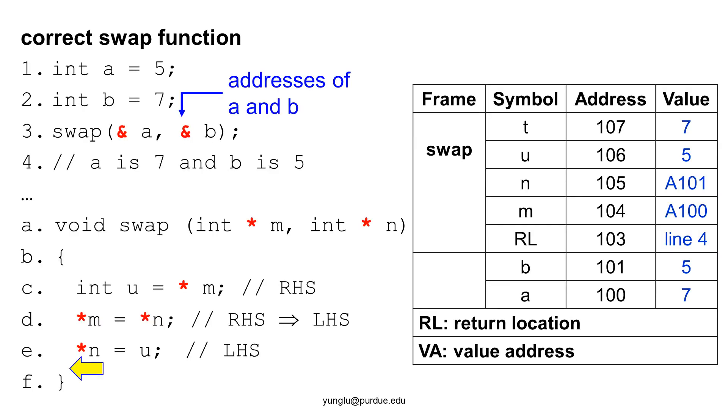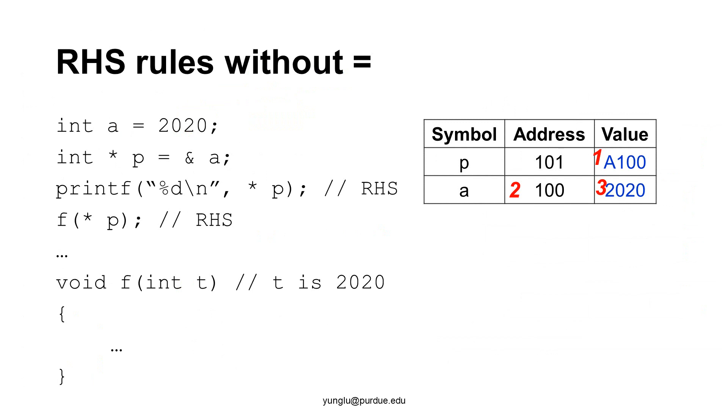This is a review of the previous lecture. We need to use pointers for writing the swap function. This slide shows the stack memory when the swap function has finished all statements and the top frame is about to pop. By using the addresses of a and b, the arguments m and n can modify the values of a and b even though a and b are not in the frame of the swap function. Please remember the rules for asterisk based on whether it is on the left-hand side of assignment or right-hand side of assignment.